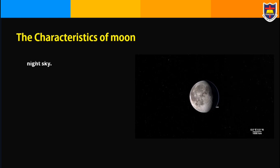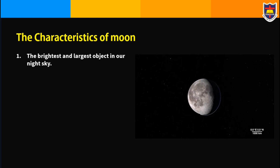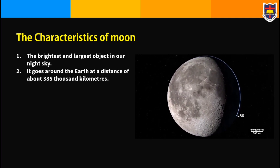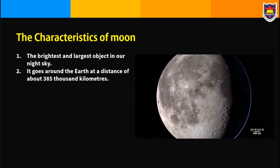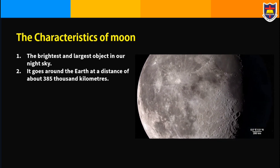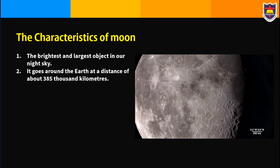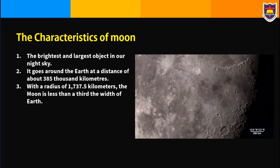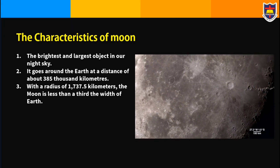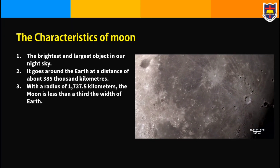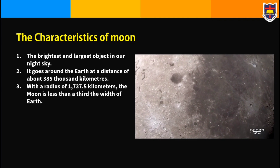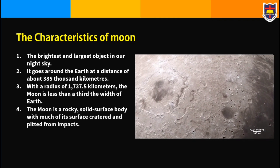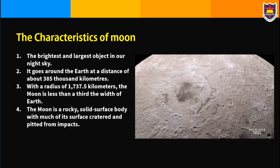The moon is the brightest and largest object in our night sky. The moon is Earth's only natural satellite. It goes around the Earth at a distance of about 385,000 kilometers. With a radius of 1,737.5 kilometers, the moon is less than a third the width of Earth.